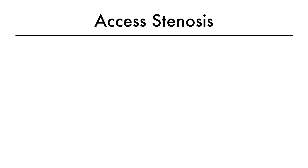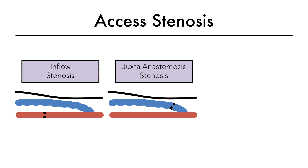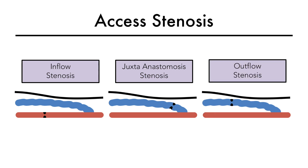This video will go over axis stenosis, which is the most common AV axis complication. Axis stenosis can be of three main types: number one, inflow stenosis, that is, within the arterial inflow segment; number two, juxta-anastomotic, that is, within the first two centimeters downstream from the anastomosis; or number three, it can develop in the venous outflow segment. All of these can cause significant fistula malfunction.